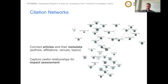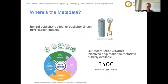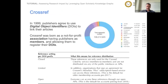Citation networks are paramount in assessing the impact of a publication, but also the impact of institutions and research areas. For impact assessment, publication metadata are important. Traditionally they remain locked behind publishers' silos, but recently there are open science initiatives like I4OC, the Initiative for Open Citations, that help make metadata publicly available. An important step was the adoption of digital object identifiers by publishers and the use of Crossref as an overseeing organization that allows publishers to register and link their references. The Initiative for Open Citations led to a sharing tier within Crossref that provided open references.